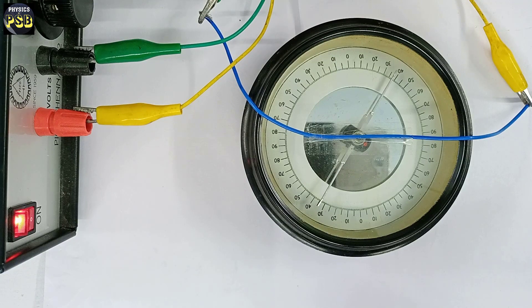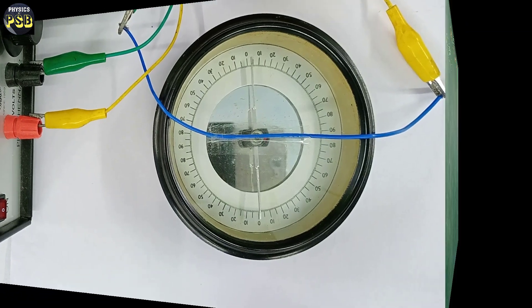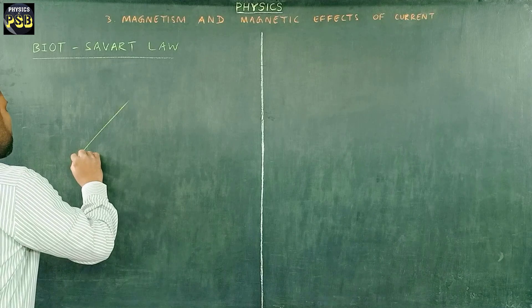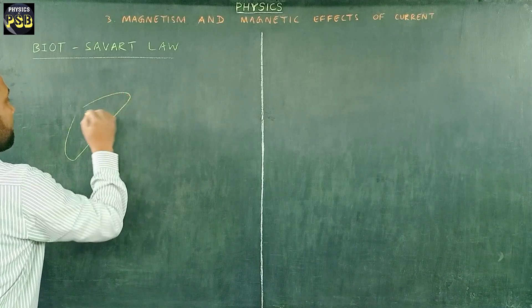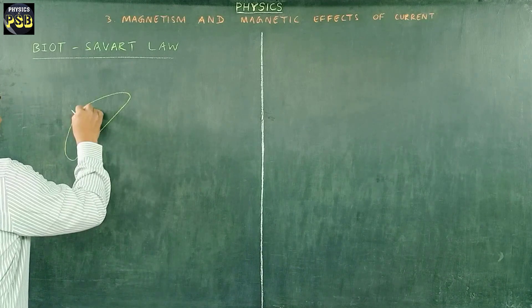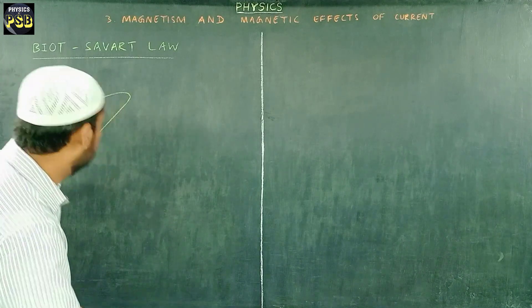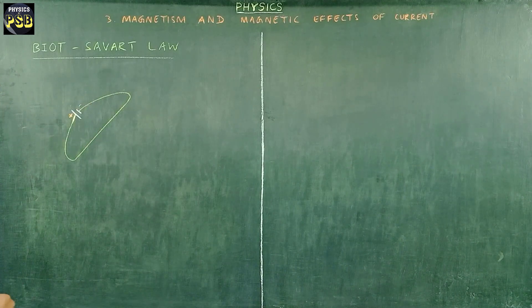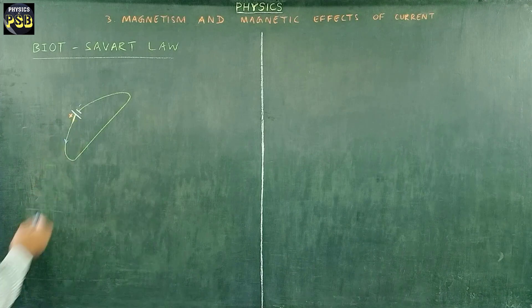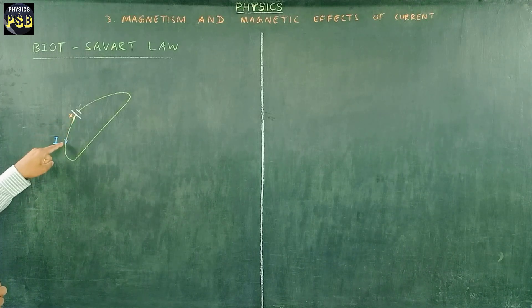I consider a conductor which is connected to a cell. This cell has got the positive and a negative terminal. We know current always flows from positive terminal and moves towards the negative terminal of the cell. So according to that the direction of current I will be like this, the current will flow in this direction.